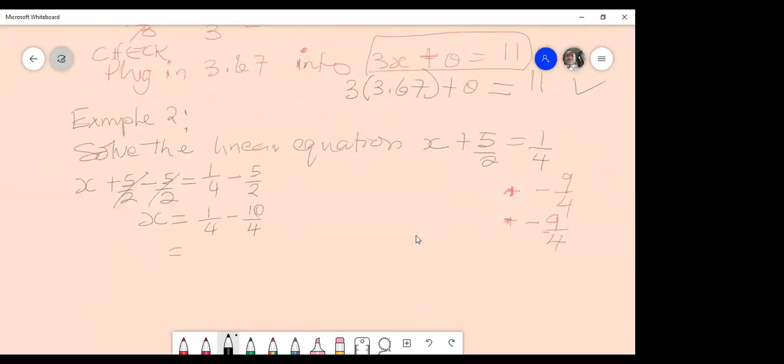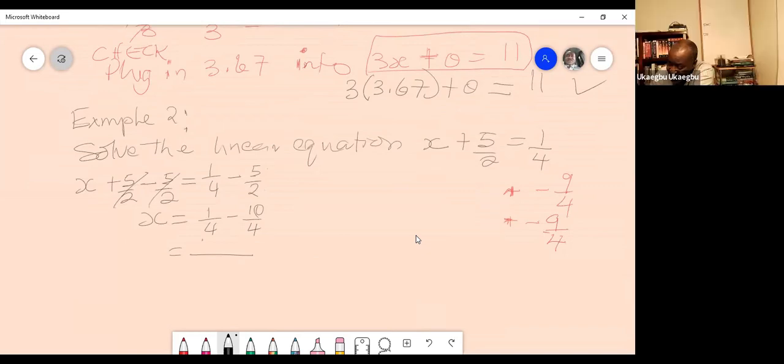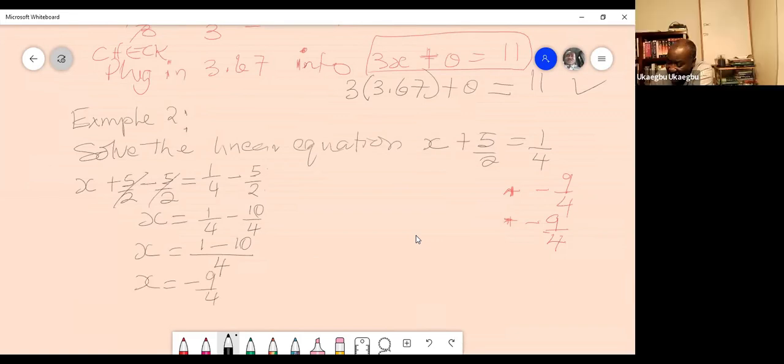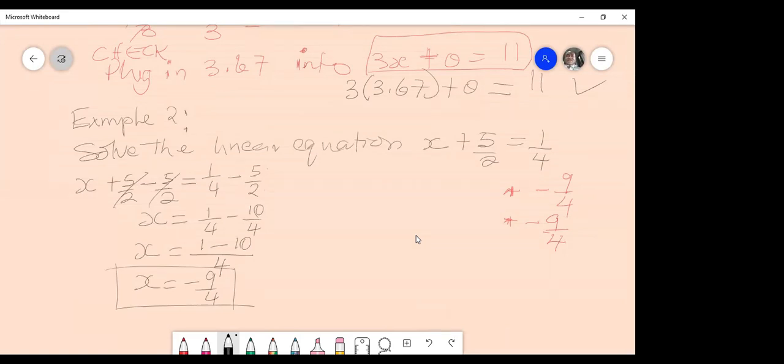So then you just subtract it. And when you subtract it, it equals x equals 9 over 4. Okay. So the numerator you subtract 1 minus 10. And then you just return the denominator, which is 4. Yeah. And that's negative 9 over 4. Thank you. The process is good. Does anybody disagree with that? Ashley, is that what you used or did you use another method? No, it's the same method.